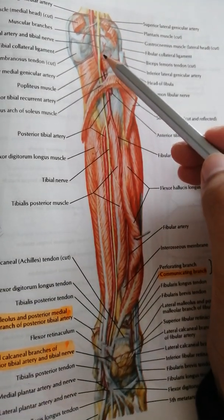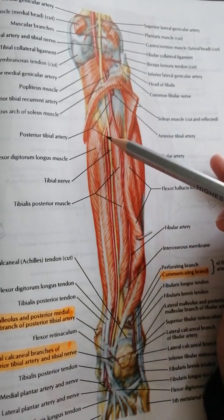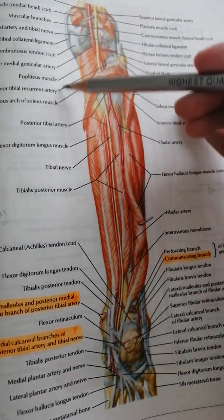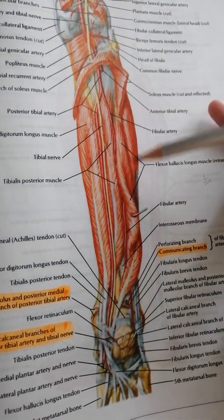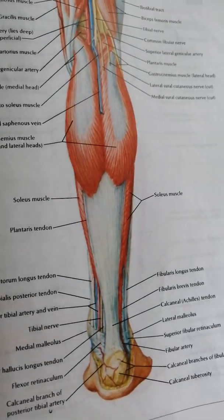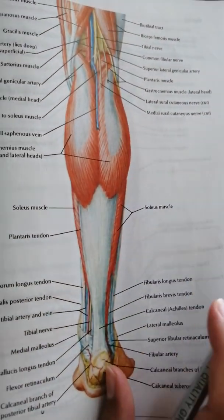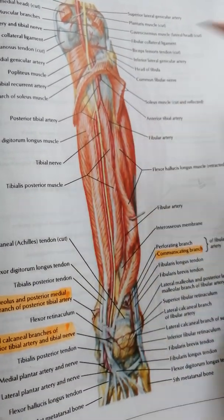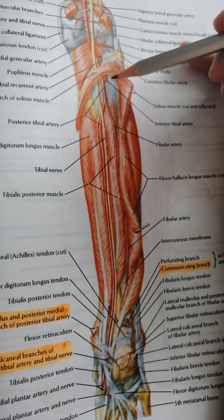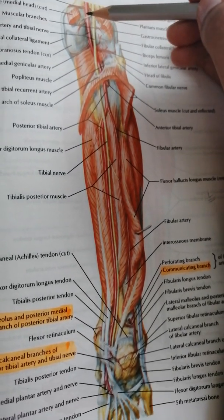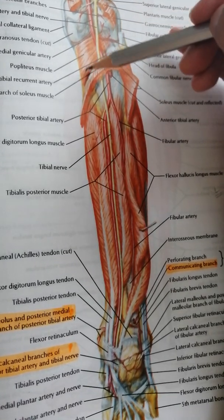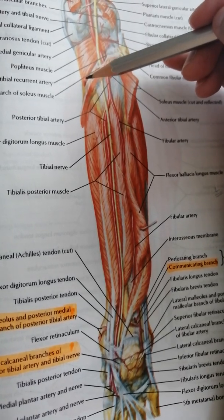Today we'll be talking about the posterior tibial artery, which is the main artery of the back of the leg. This is a posterior view showing a deep dissection of the back of the leg in which the superficial muscles — the gastrocnemius and the soleus — have been removed. With these two muscles removed, we can see the neurovasculature. In the popliteal fossa, we have the popliteus muscle, which is considered a deep muscle of the back of the leg.